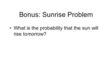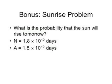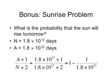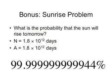One bonus problem — a philosophical question: what's the probability that the sun will rise tomorrow? The total number of days in the past is about 1.8 times 10 to the 12, and as far as we know, the sun has risen every single day, so a is also 1.8 times 10 to the 12. So (a+1)/(n+2) equals approximately 1 minus 1 over 1.8 times 10 to the 12, which is 99.9999... — ten more nines — and then 44%. It's incredibly likely that the sun will rise tomorrow, though take that result with a grain of salt since this is a purely mathematical derivation.